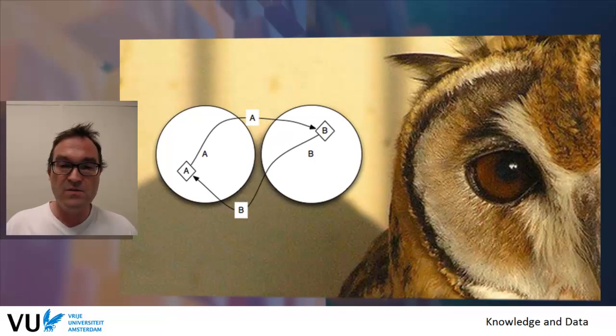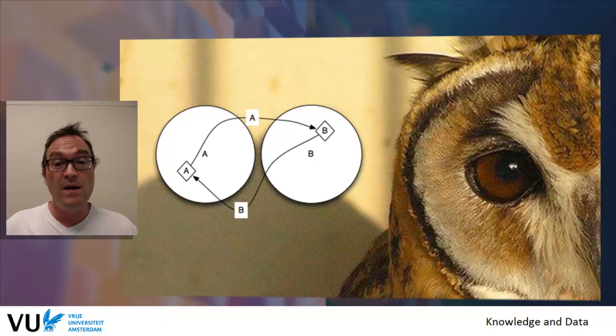Here there is a sort of double use of the concept of lion, as it's both an instance of the class species and it is the class of all the objects. This creates huge problems in the semantics.